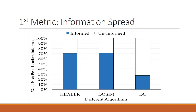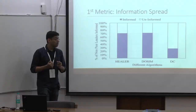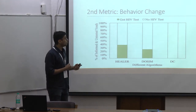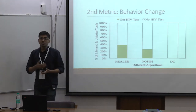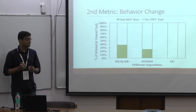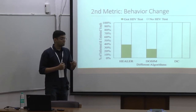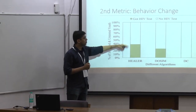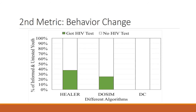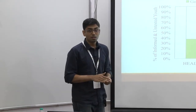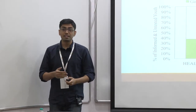Is this information spread actually resulting in behavior change? Of the people who received HIV information, we measure what percentage actually started getting tested for HIV by the end of the interventions. In the AI-based pilot studies, approximately 40% and 27% of the people who were informed about HIV started getting tested. Whereas in the degree centrality study, none of the informed non-peer leaders had started getting tested for HIV.